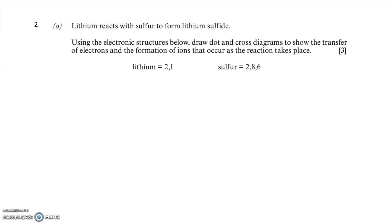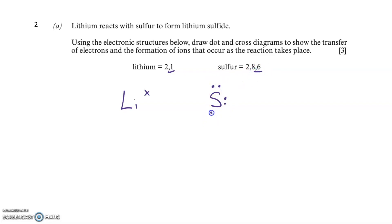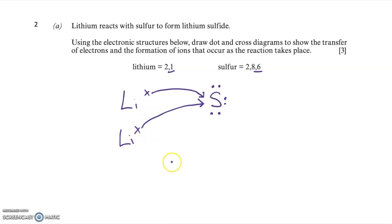The first part of this question is asking me to draw a bonding diagram for lithium sulphide. Lithium is a metal and sulphur is a non-metal, so it has ionic bonding. The lithium atom has one electron in its outer shell, represented by a cross, and sulphur has six electrons in its outer shell, represented by dots. Lithium needs to lose one electron and sulphur needs to gain two, so I have to draw two lithium atoms. Both lithium atoms lose one electron, which is transferred to the sulphur, resulting in two Li⁺ ions and one S²⁻ ion.